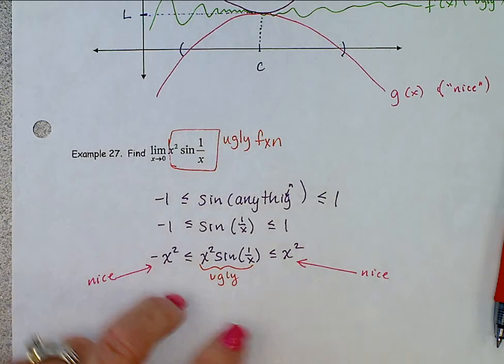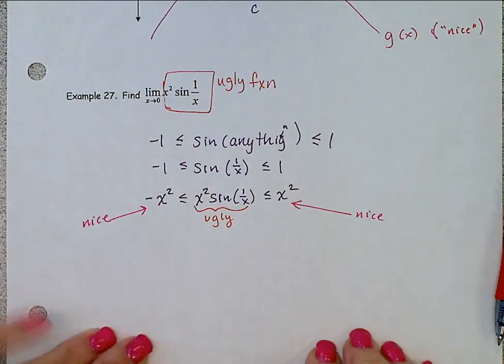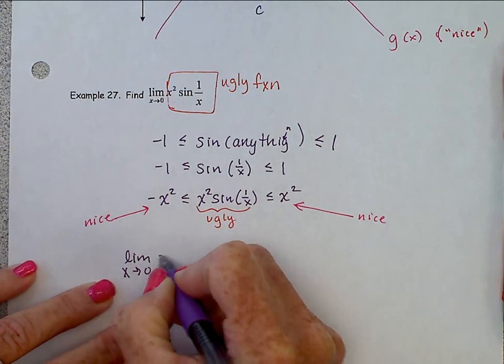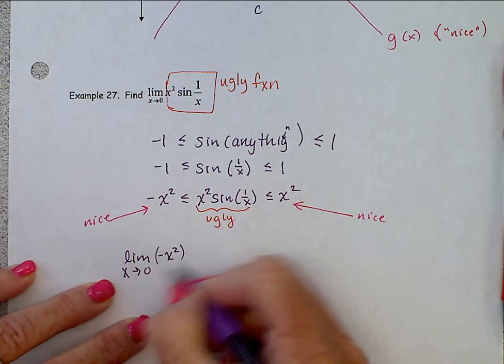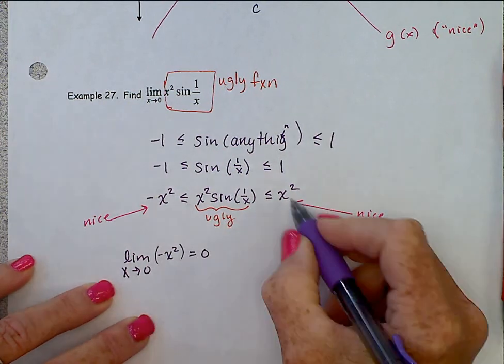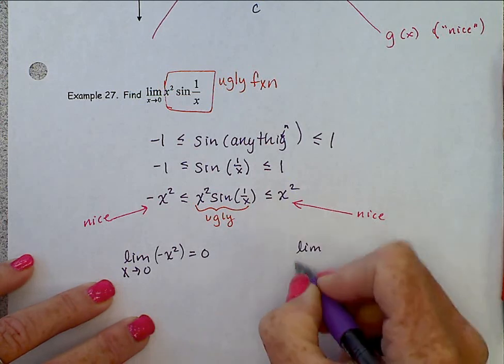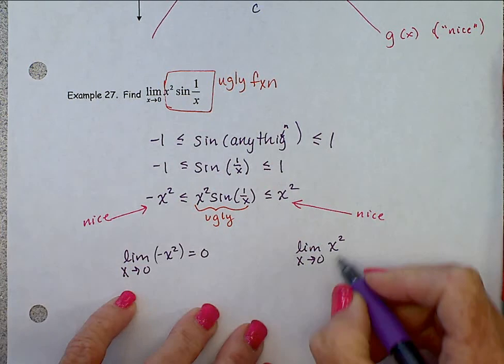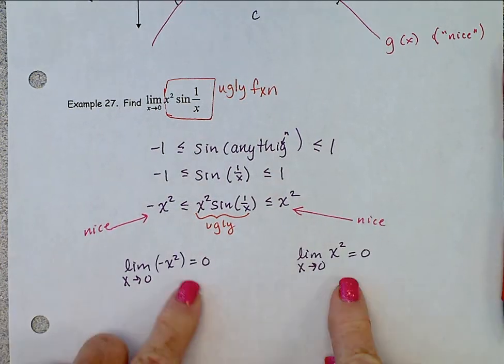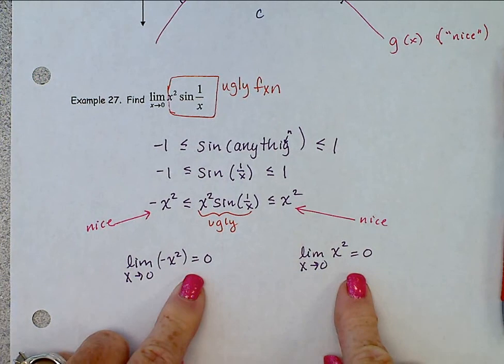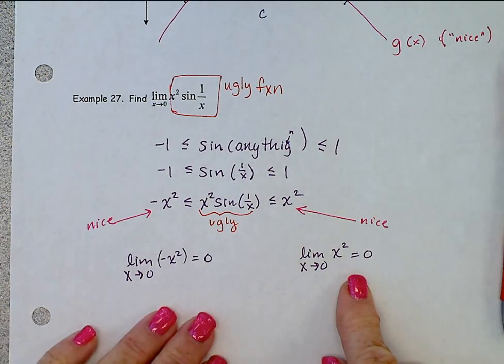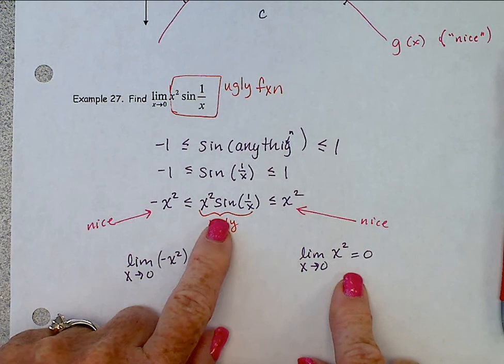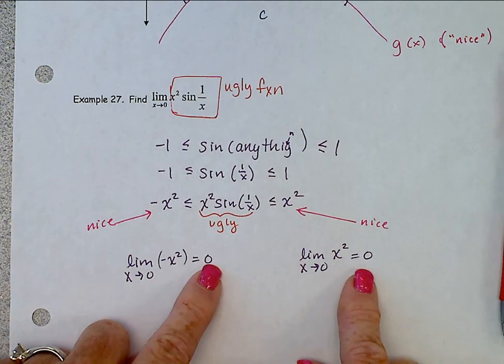The only thing that's left to do is to figure out if those two functions have the same limit as x approaches zero. So we check the limit as x approaches zero of negative x squared. Plug in the zero. That is zero. Check over here. The limit of this other nice function as x approaches zero. The limit of x squared as x approaches zero. That's also zero. Hint, these two have to be the same. If they're not the same, you did something wrong. Then the squeeze theorem is not going to work for you. These two limits have to be the same.